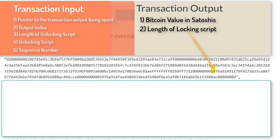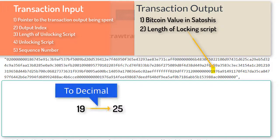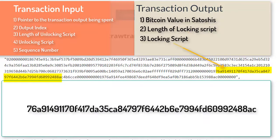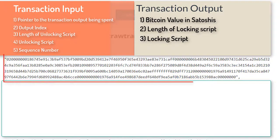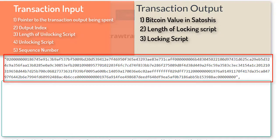The next one byte, which is '19', is the length of the locking script — 25 in decimal — meaning the next 25 bytes are the locking script. After that, the second output transaction starts with the Bitcoin value in satoshis in little-endian format, followed by the locking script length and then the actual locking script. This is the format of the transaction in which it is transmitted over the network.